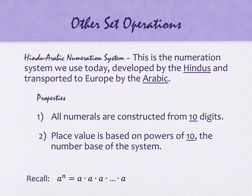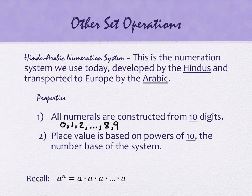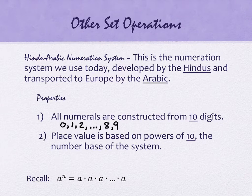Some properties of our numeration system — things that you know but don't really think about because it's so familiar. All of our numerals are constructed from 10 digits: the digits 0 through 9. The number 10 is not a digit because it's two digits. We have a place value system based on powers of 10. The hundreds place is 10 times 10; the millions place is 10 to the sixth power.